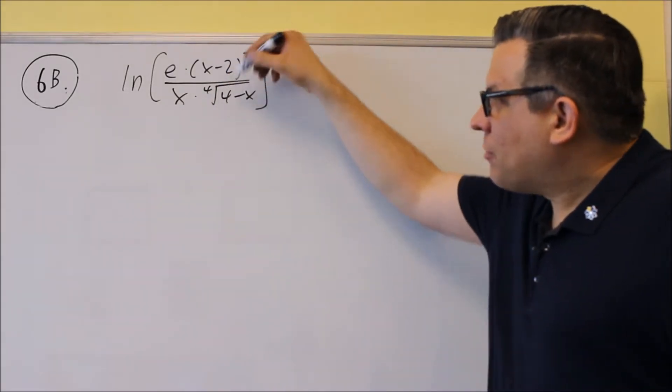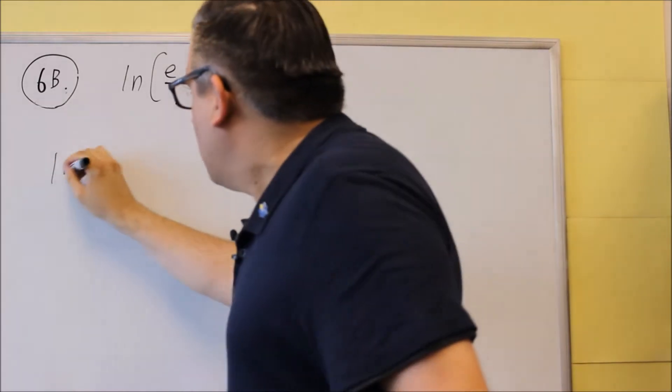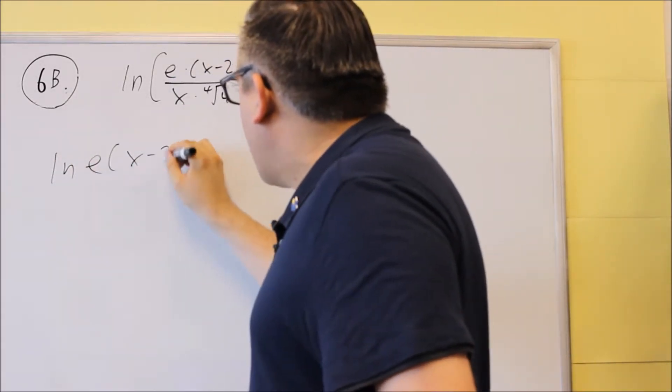For 6b, we're going to start by breaking this up again, expanding it. Because we have division, that means that's going to turn into a subtraction.